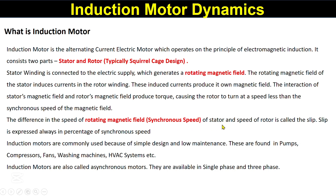The rotor turns at a speed less than the synchronous speed of the magnetic field. The difference between the synchronous speed of the stator's magnetic field and the speed of the rotor is called slip, which is always expressed as a percentage of synchronous speed. Induction motors are commonly used because of their simple design and low maintenance. They are found in pumps, compressors, fans, washing machines, and HVAC systems. Induction motors are also called asynchronous motors and are available in single-phase and three-phase.